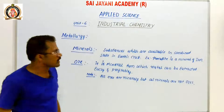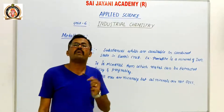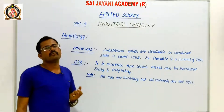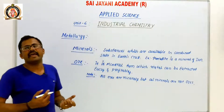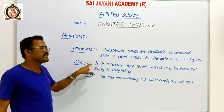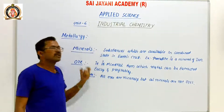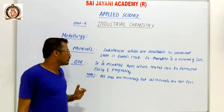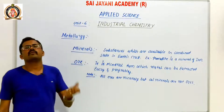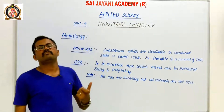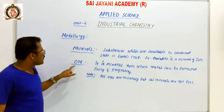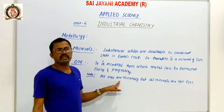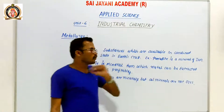Mineral, in general, is a substance available in combined state. From that combined state, metal is extracted. Ore is in a ready form from which metal is easy to extract. The main difference is: minerals are in combined state containing 2–3 metals, whereas from ore, one specific metal is easy and profitable to extract. All ores are minerals, but all minerals are not ores.